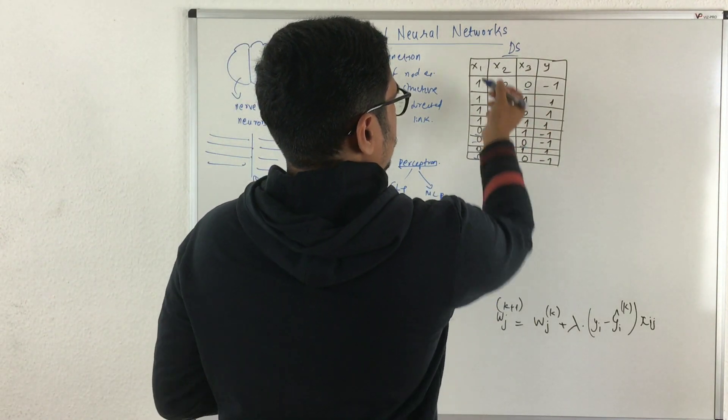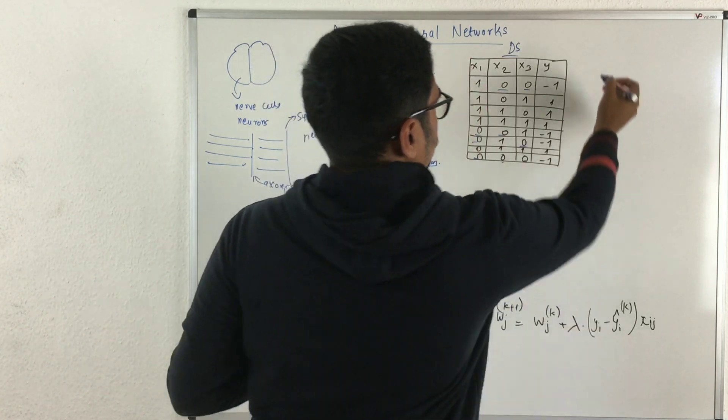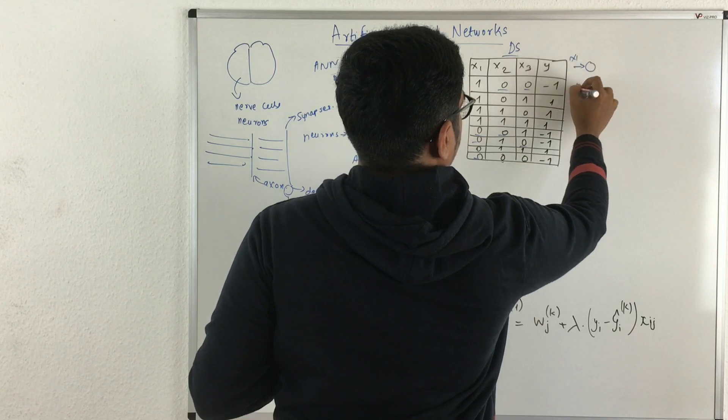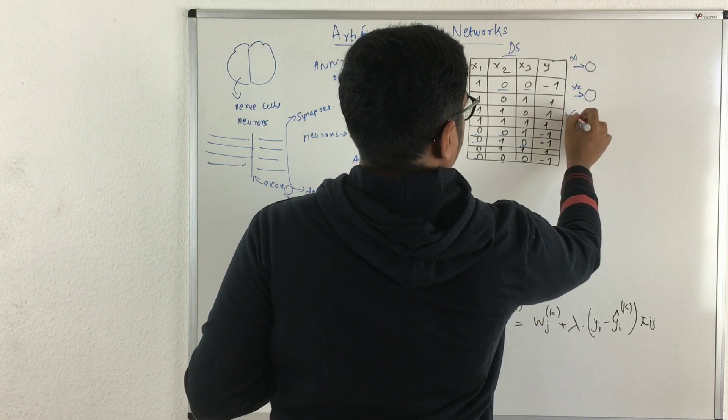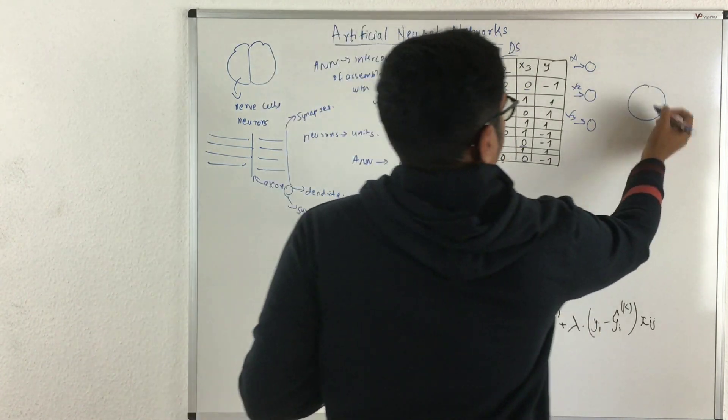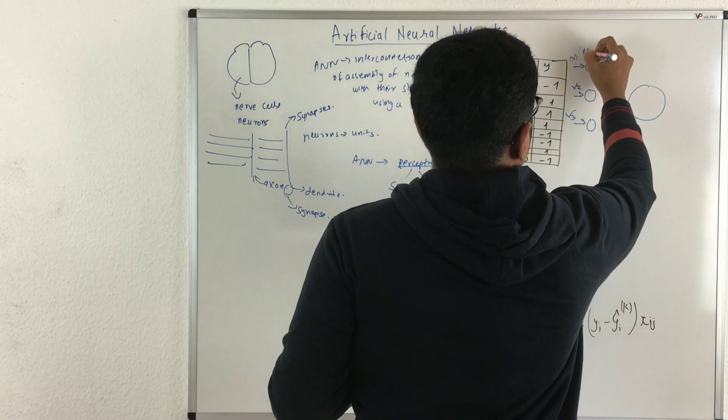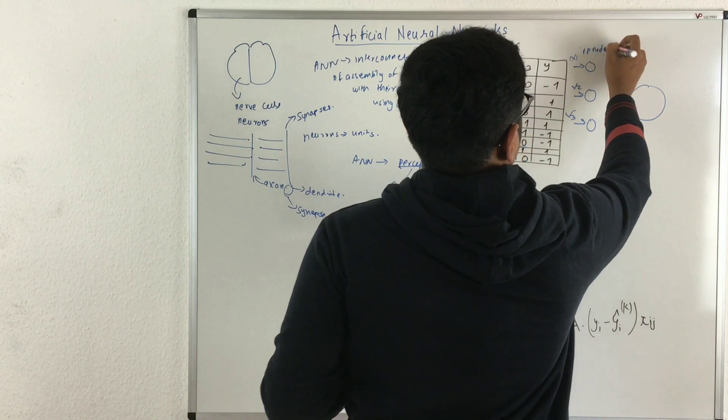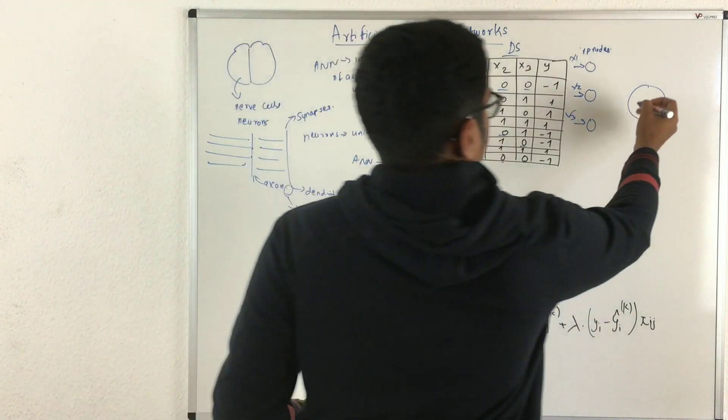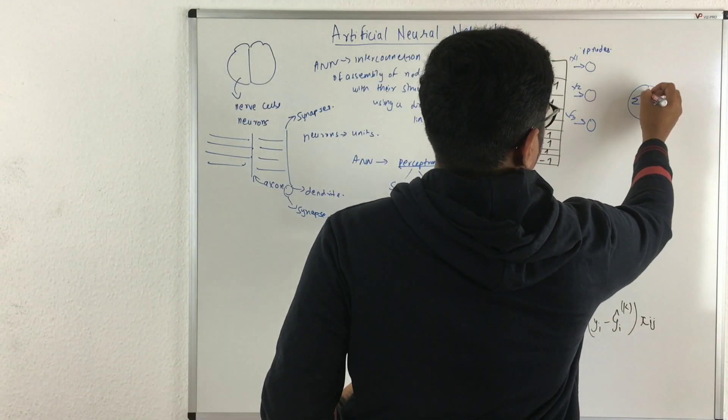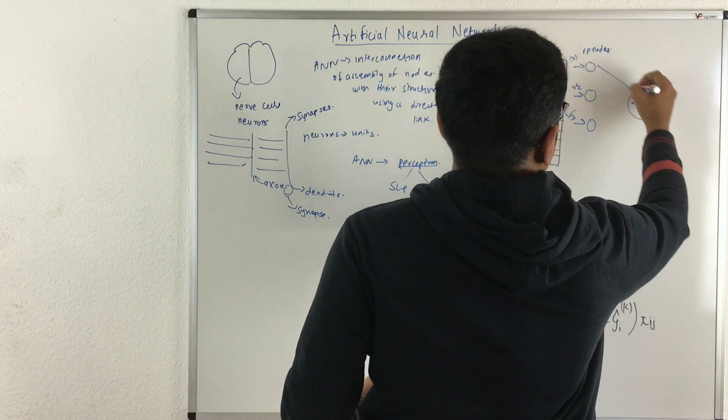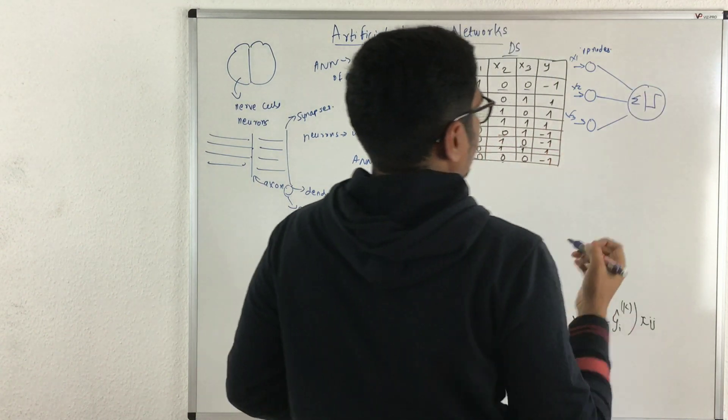Here you can see three inputs or three attributes, so correspondingly we'll create three nodes. This will be our x1, this will be x2, and this will be x3. Now this is connected to some function. Let this be input nodes. Perceptrons are basically comprised of input nodes and one output node. This will be our output node which will be some sigmoid function or step function.